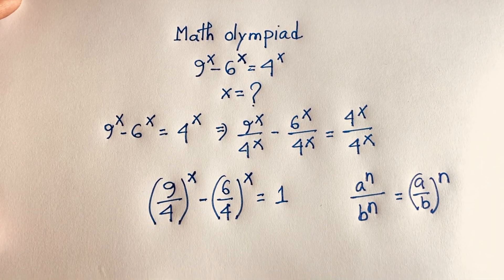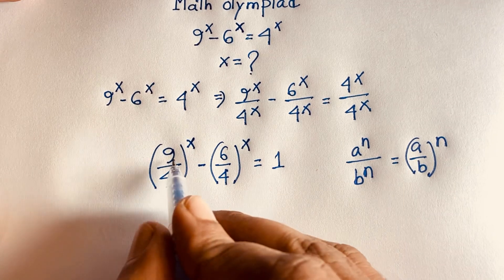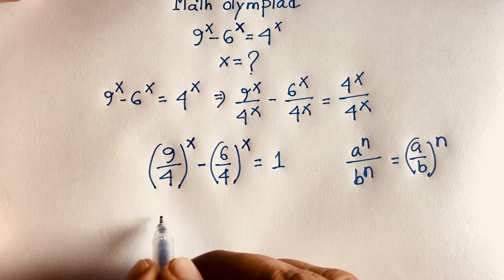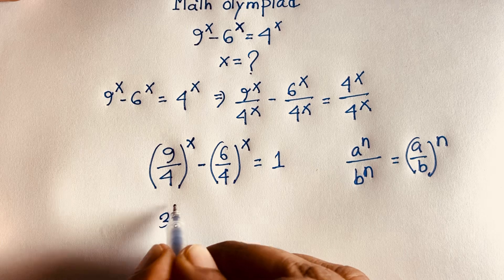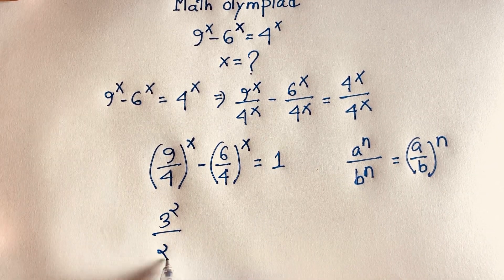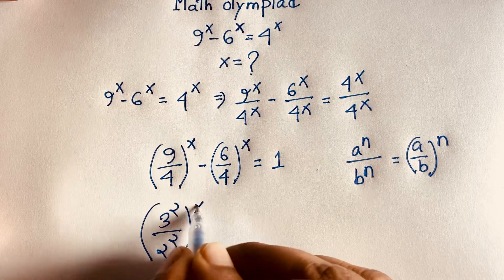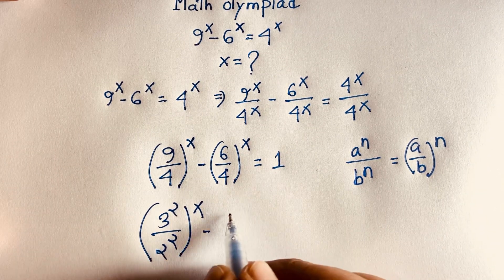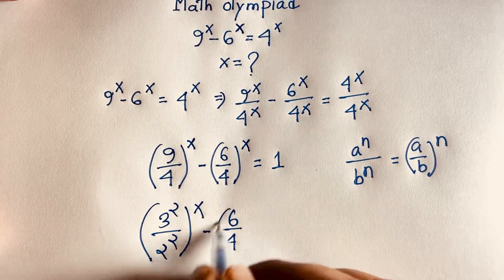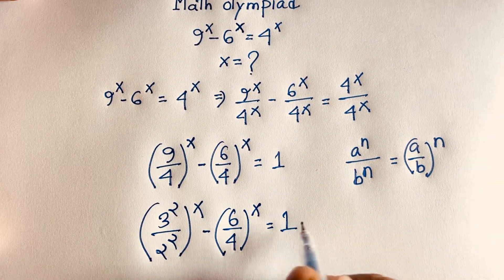Now, 9 is 3 squared and 4 is 2 squared, so (9/4)^x becomes (3²/2²)^x. And (6/4)^x simplifies to (3/2)^x. So we have (3²/2²)^x minus (3/2)^x is equal to 1.